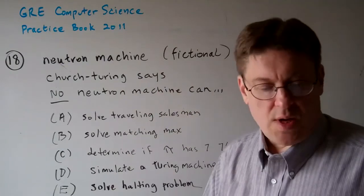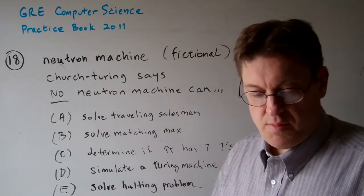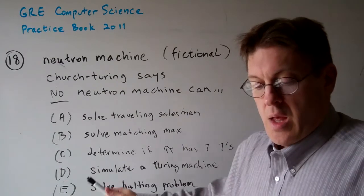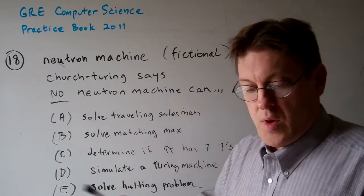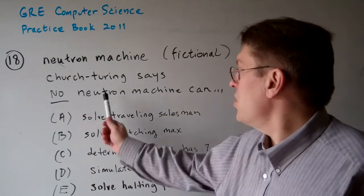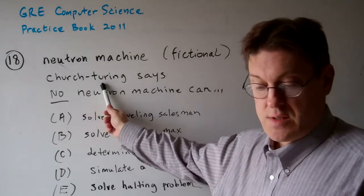It's some new concept Professor X has puzzled out. Which of the following would be a consequence of the Church-Turing thesis? Okay.